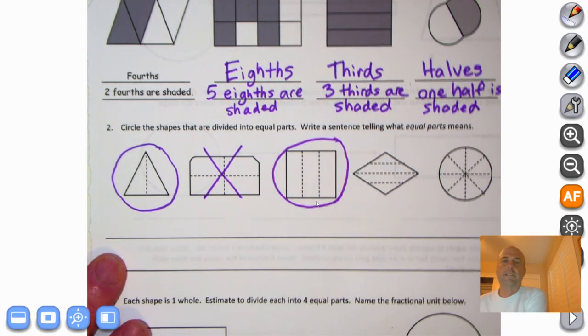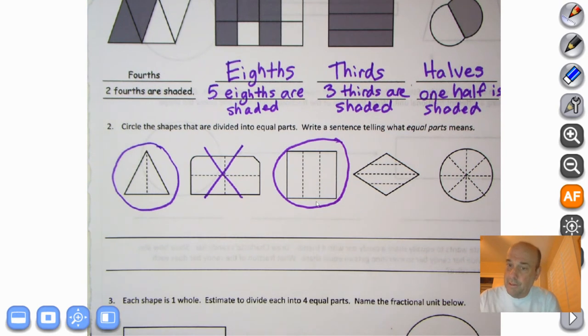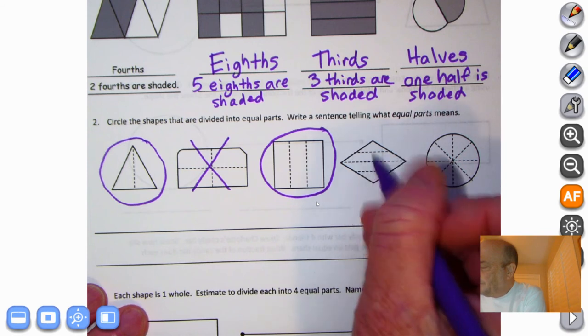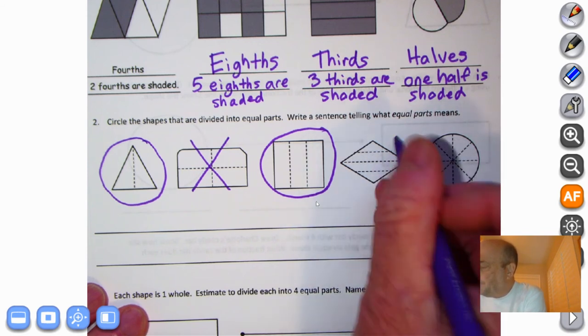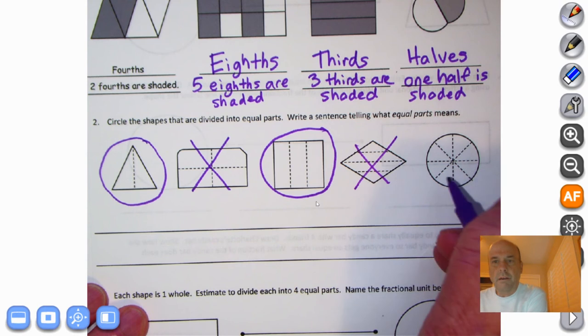Why don't you pause and do the next two on your own. And welcome back. Well, we can see that these are not equal parts. That's much smaller. It's just a mess. So, nope. And over here, they all look equal.